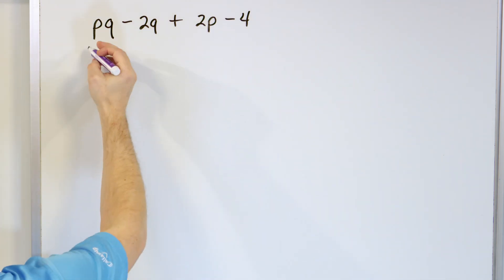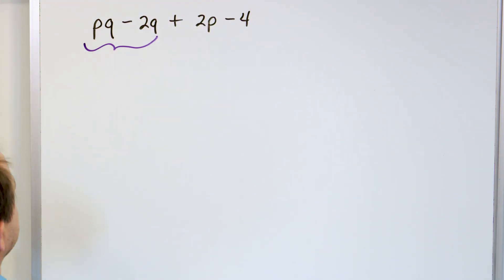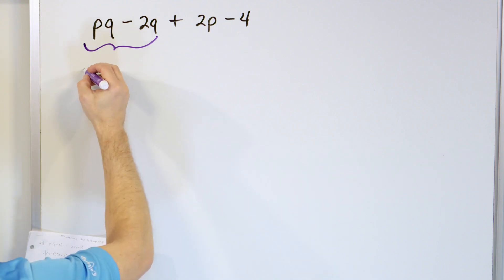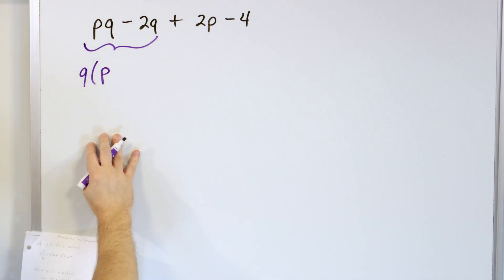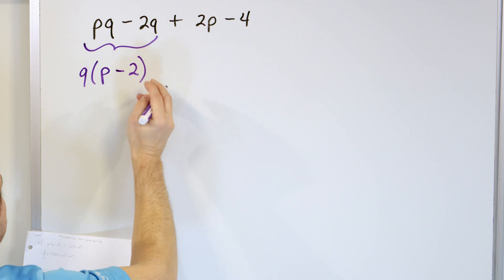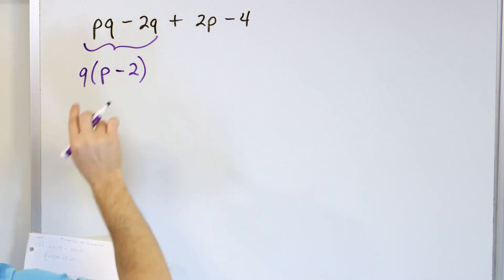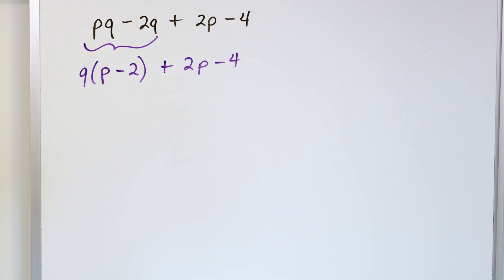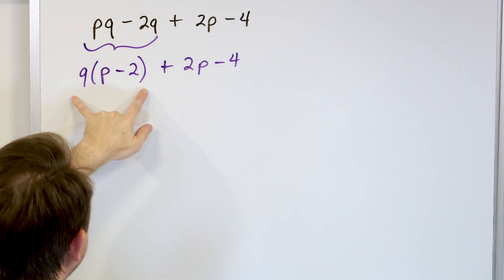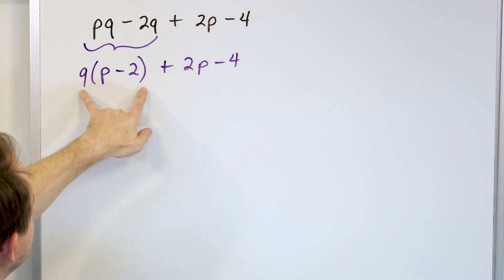Instead of trying to factor the entire expression at once, focus only on the first two terms: p times q minus 2. There's a q in both, so I can pull a q out of just those two terms. Q times p minus 2 — because q times p gives me pq, and q times negative 2 gives me negative 2q. So you multiply q into both places and recover those first two terms. The last two terms still remain exactly as they were — they just come along for the ride.